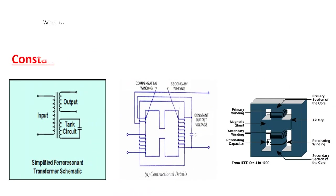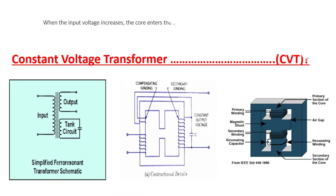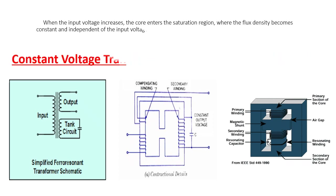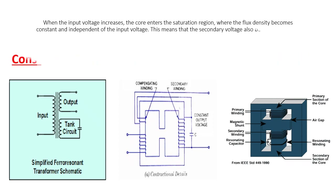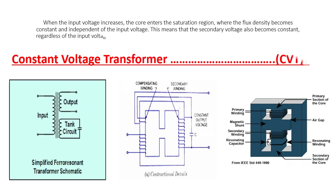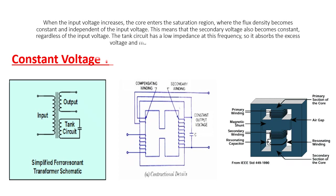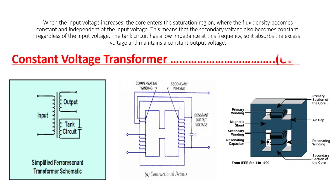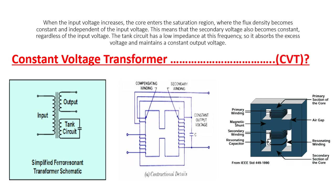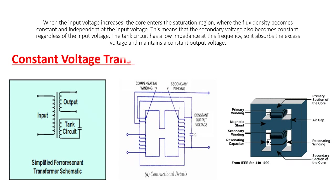When the input voltage increases, the core enters the saturation region, where the flux density becomes constant and independent of the input voltage. This means that the secondary voltage also becomes constant, regardless of the input voltage. The tank circuit has a low impedance at this frequency, so it absorbs the excess voltage and maintains a constant output voltage.